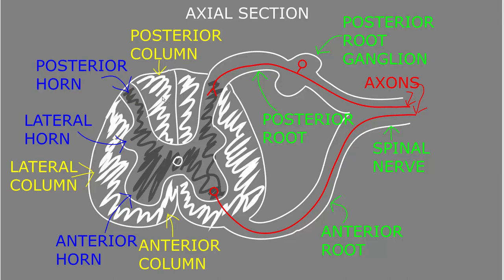The white matter is often referred to as columns, divided into anterior, lateral, and posterior — the anterior column, the lateral column, and the posterior column of white matter. To preview what we'll cover later: much of the anterior horn gray matter contains somas for efferent axons that travel in the anterior root of the spinal nerve, whereas axons of afferent neurons travel in the posterior root into the posterior horn gray matter.